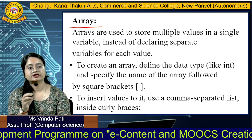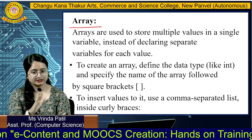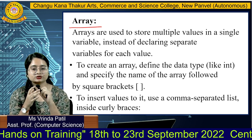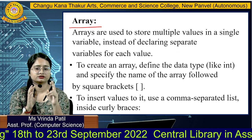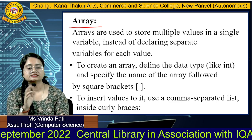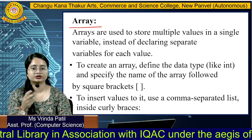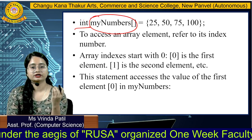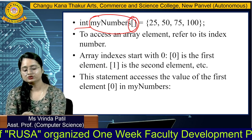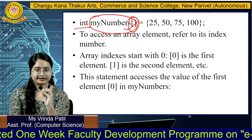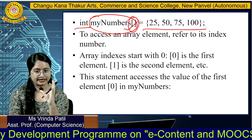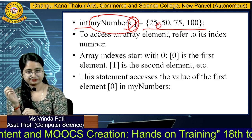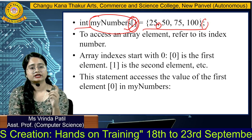To create an array, define the data type like integer and specify the name of the array followed by the square bracket — meaning which data type you are going to store. You want to store numbers, integers, or a string — whichever data type you require. To insert values, use a comma-separated list inside curly braces. For example: int, which is your data type; myNumbers, which is your variable name denoted using square brackets; and the list stored using curly braces, with elements separated by commas, ending with a semicolon.